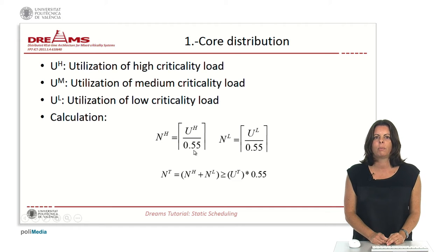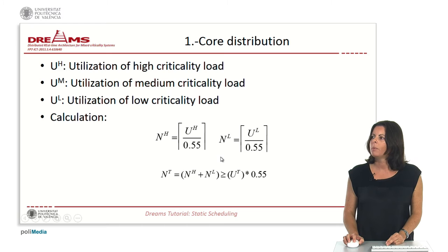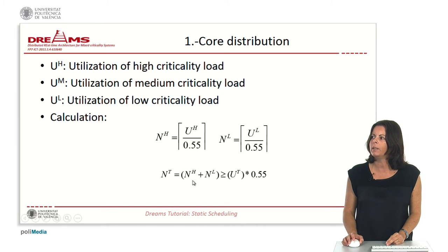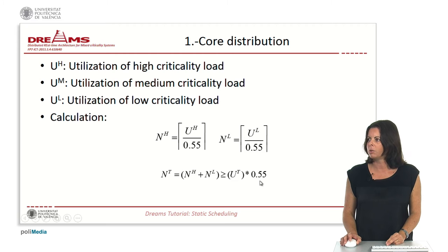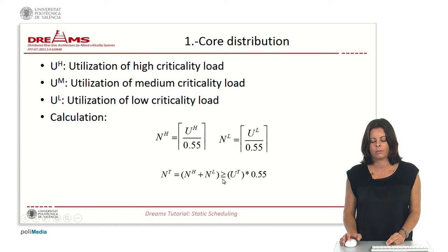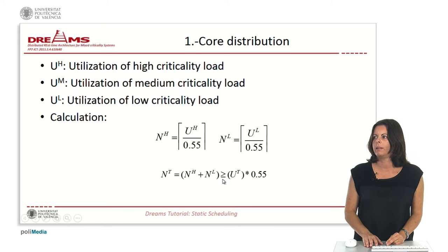The medium criticality level partitions will be allocated to either set H or set L, but we have to be sure that these medium partitions will be successfully allocated to one of these two sets. So there is a condition that must be fulfilled: the total utilization of the system multiplied by this factor must be lower than the total number of cores. In case this condition is not fulfilled, we have to increase NH or NL by one unit and repeat the equation.